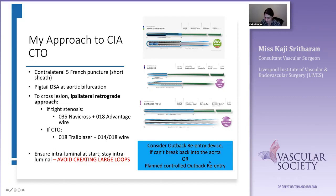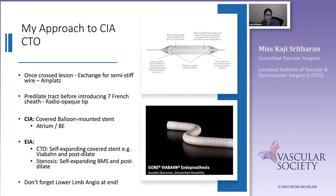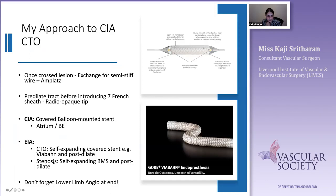Once I've crossed the lesion, I exchange for a semi-stiff wire, pre-dilate, and for the common iliac I'll use a balloon-mounted covered stent. For an external iliac CTO I want to use a Viabahn; if it's a stenosis, a bare metal self-expanding stent.